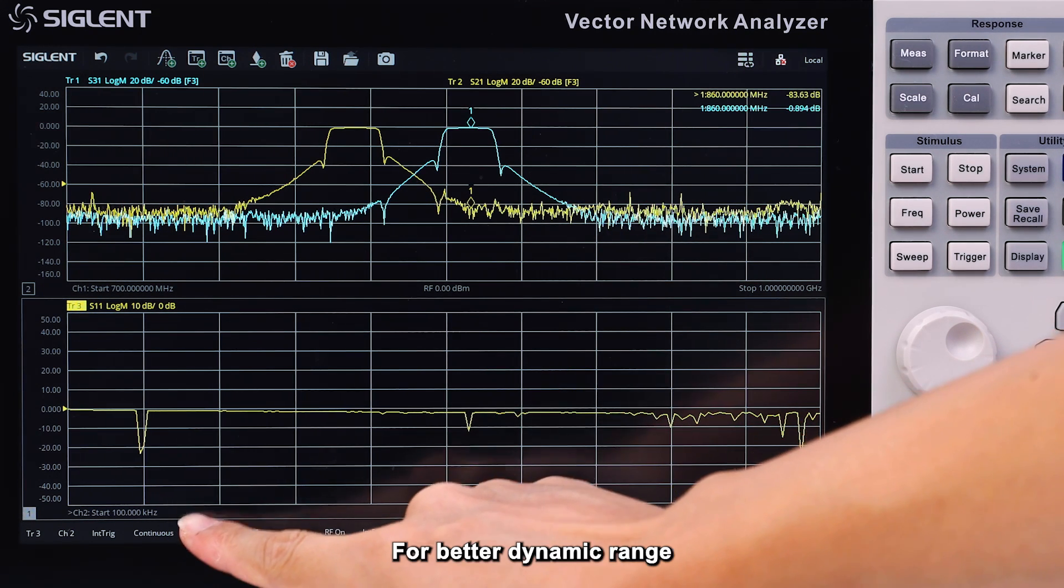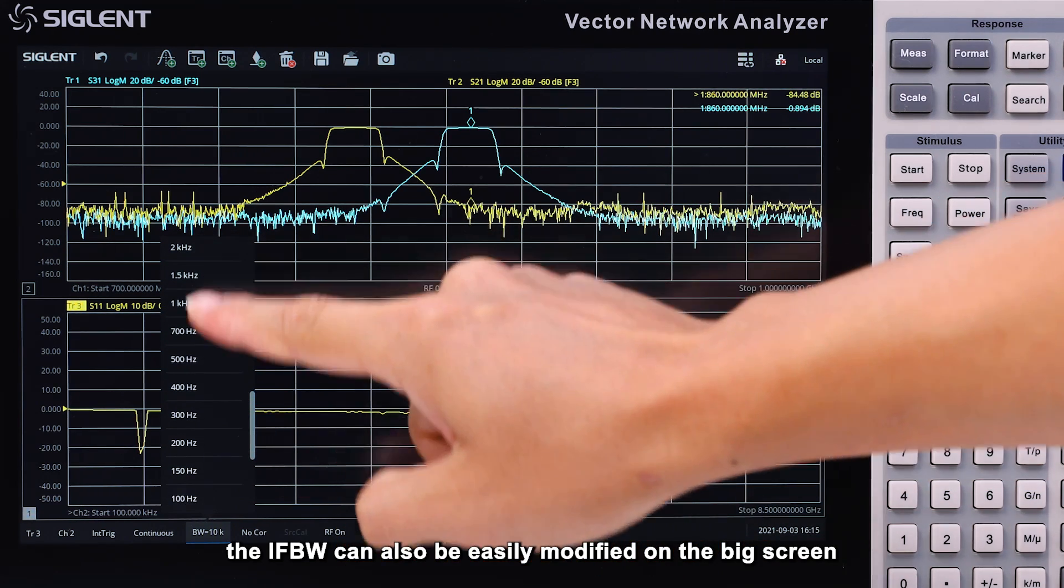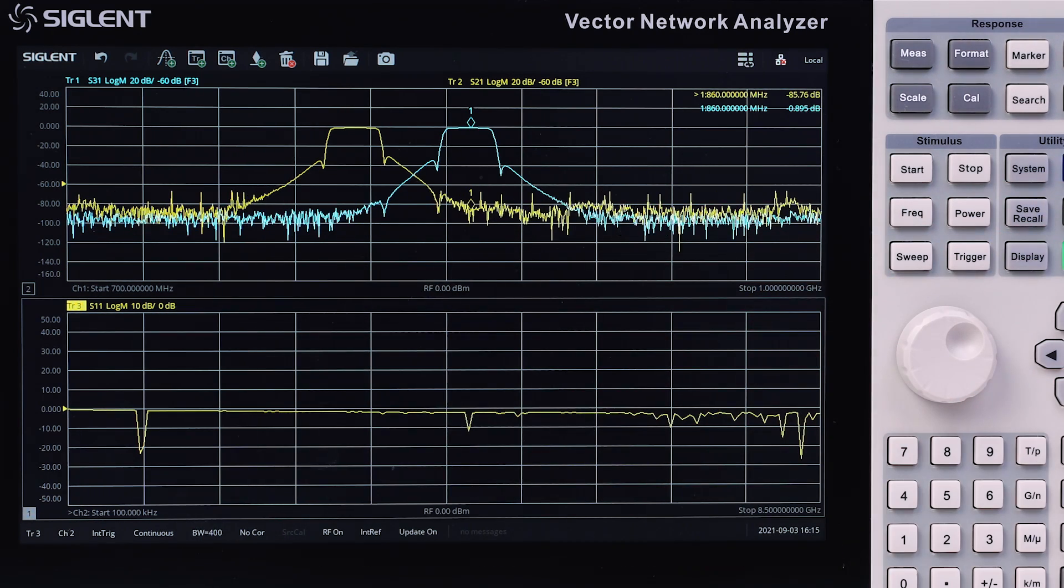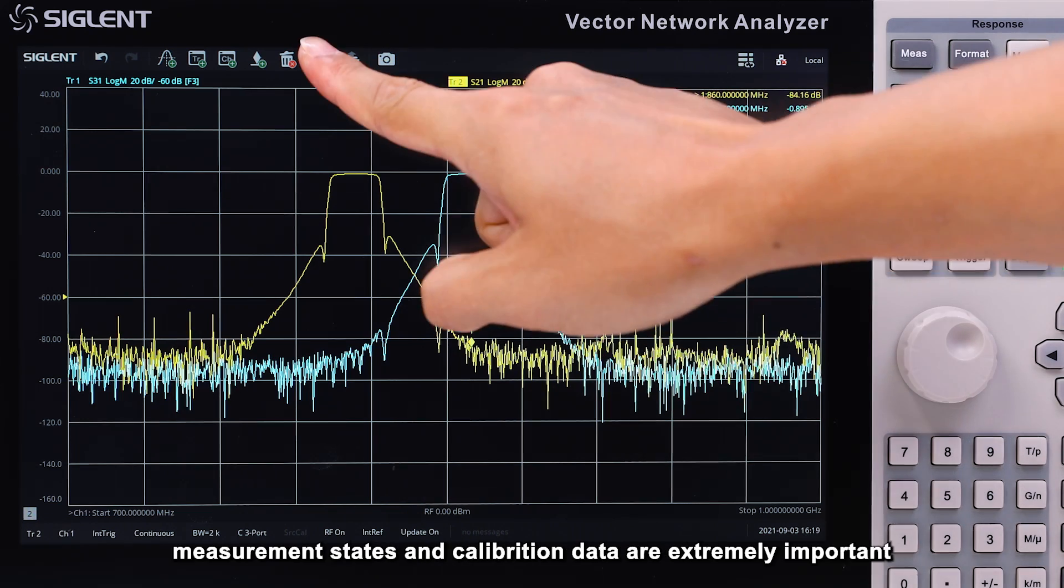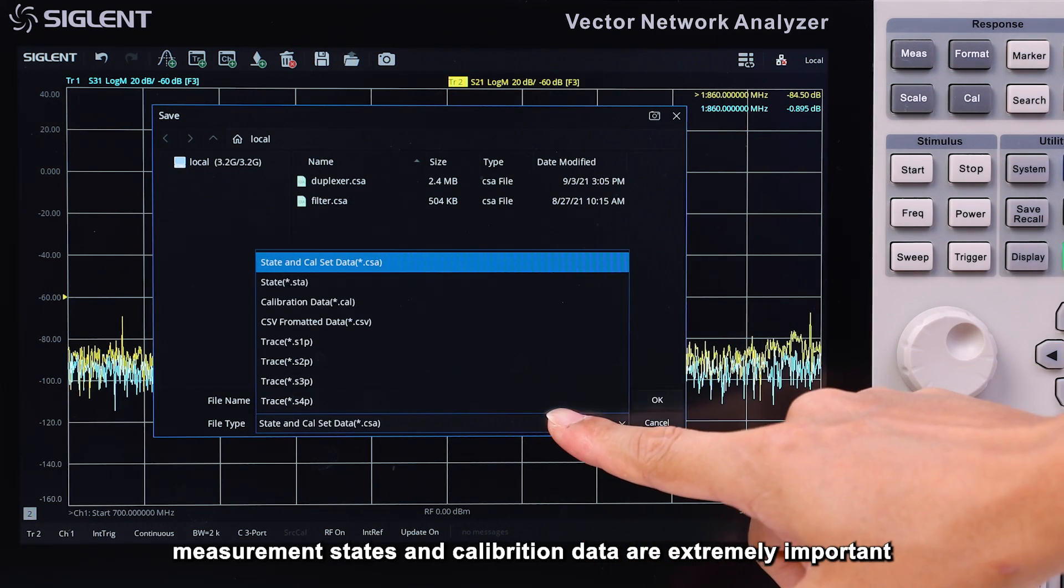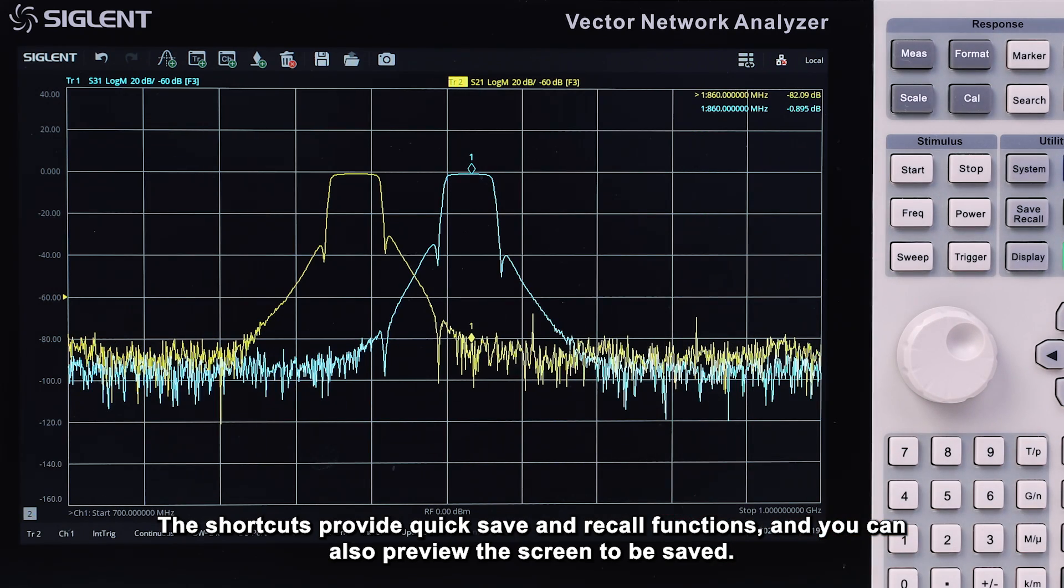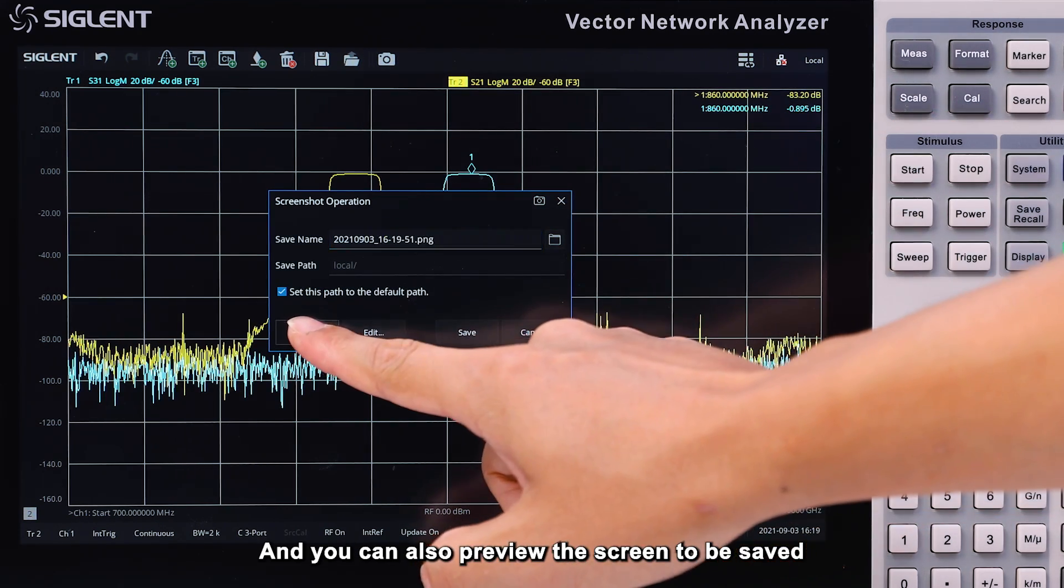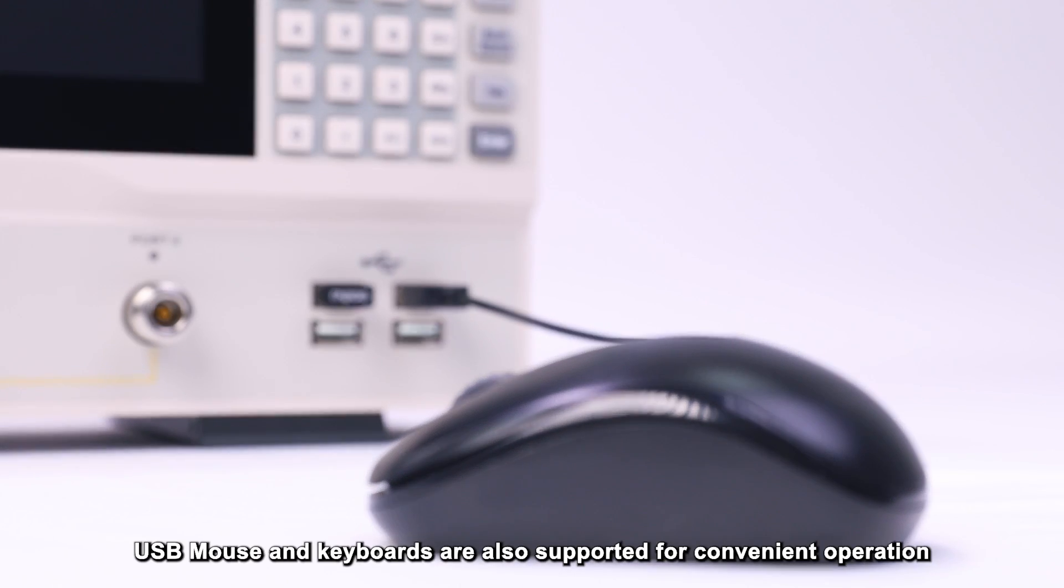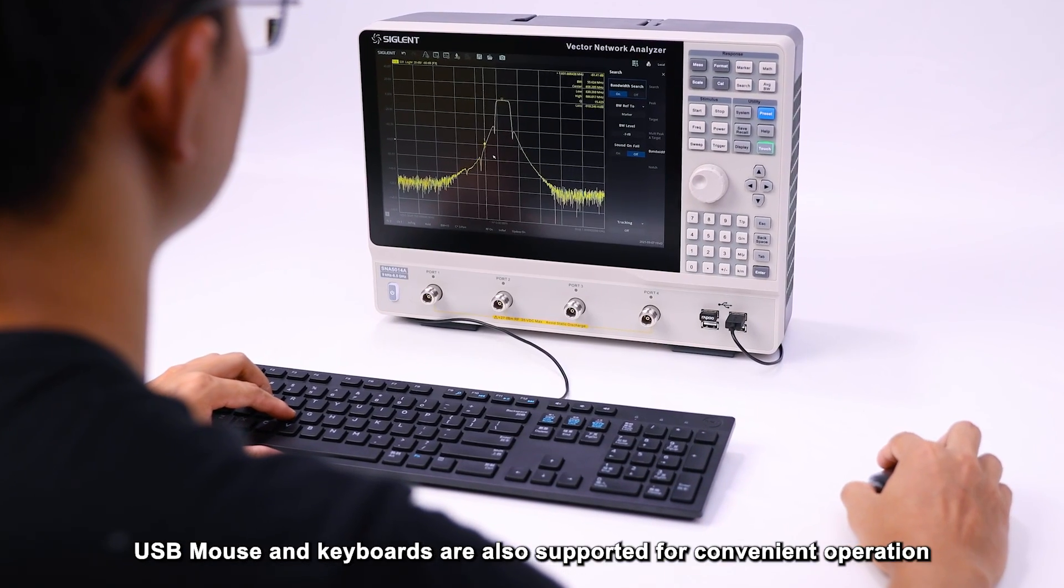For better dynamic range, the IFBW can also be easily modified on the screen. For production environments, measurement states and calibration data are extremely important. The shortcuts provide quick save and recall functions, and you can also preview the screen to be saved. USB mouse and keyboards are also supported for convenient operation.